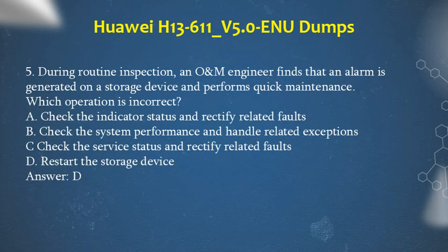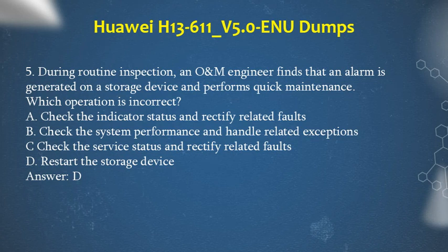Question 5: During routine inspection, an O&M engineer finds that an alarm is generated on a storage device and performs quick maintenance. Which operation is incorrect? a. Check the indicator status and rectify related faults. b. Check the system performance and handle related exceptions. c. Check the service status and rectify related faults. d. Restart the storage device. Answer: d.